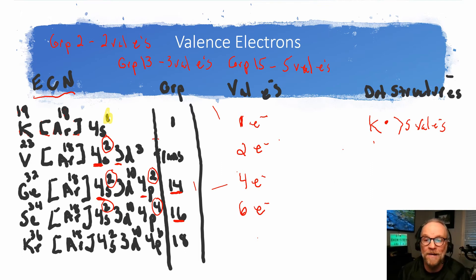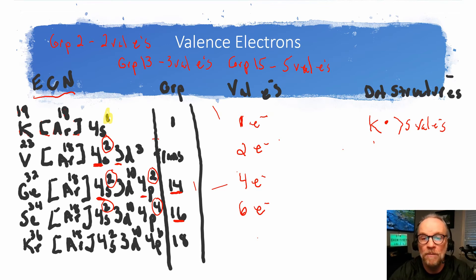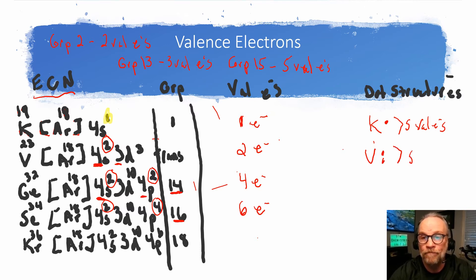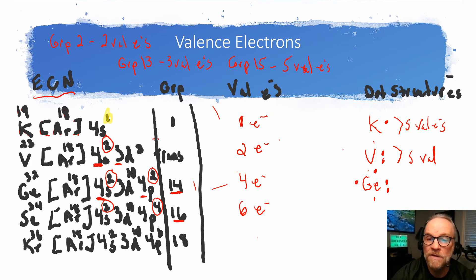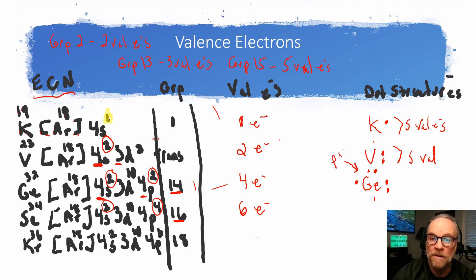Let's go back and get the dot structures for the elements we have examples for. For vanadium, since both electrons are s electrons, they fit right there next to the symbol. For germanium, we have one and two for the s electrons, and then the remaining electrons fill singly into p positions — three and four — since electrons fill singly until they have to pair.